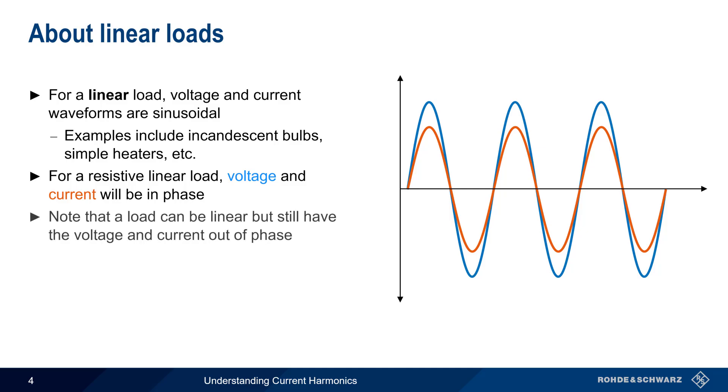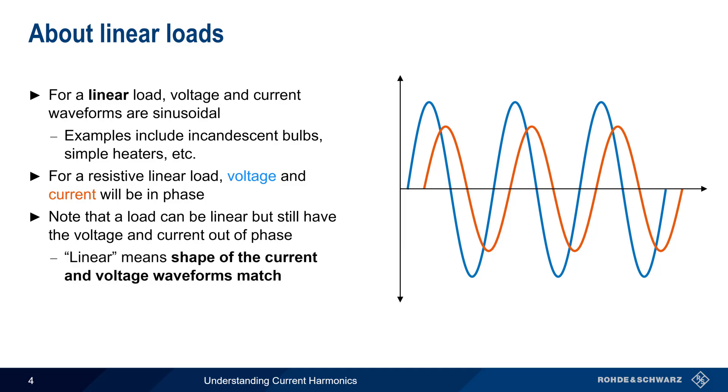However, a load is still considered linear if the voltage and current are out of phase. It's important to remember that linear simply means that the shape of the current waveform matches the shape of the voltage waveform. A phase shift between voltage and current will affect something called power factor, but this is a topic covered in a separate presentation.